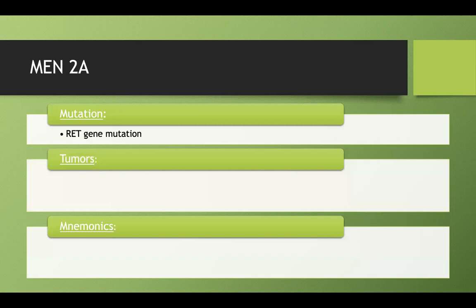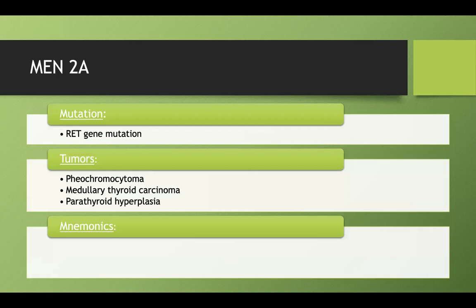MEN2A, on the other hand, is due to a RET gene mutation. The tumors associated with MEN2A are pheochromocytoma, medullary thyroid cancer — and these two we'll see in both MEN2 syndromes — and parathyroid hyperplasia.